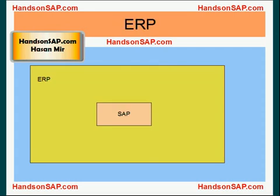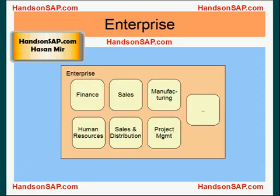SAP is an ERP software. ERP stands for Enterprise Resource Planning. ERP software is an end-to-end solution for an enterprise. A company or an enterprise consists of multiple departments — for example, finance, sales, human resources, manufacturing, etc.